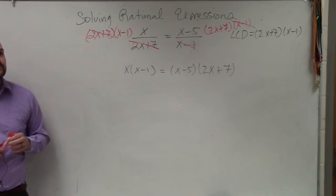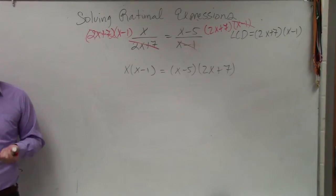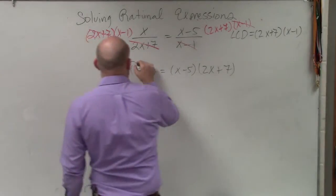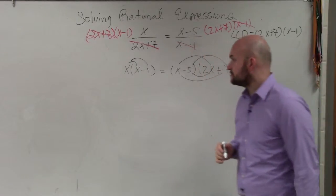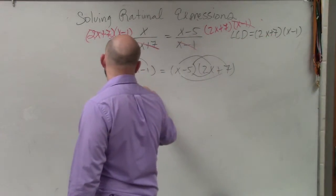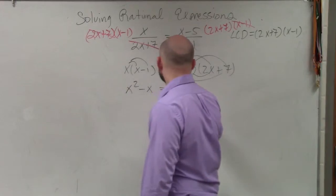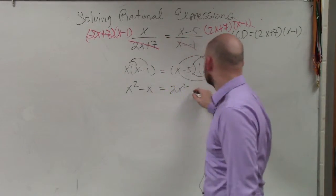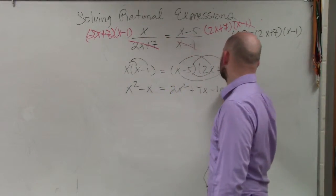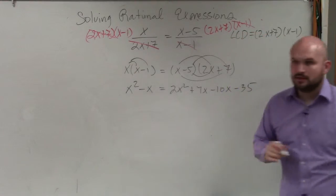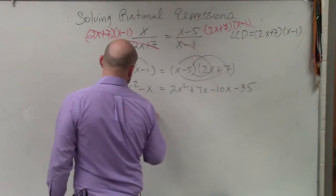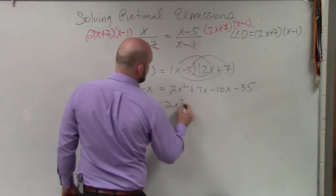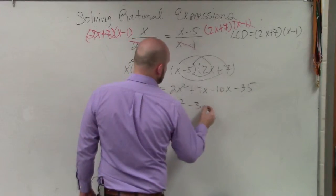Now, ladies and gentlemen, what we're going to do is apply the distributive property and multiply. Hopefully you guys remember FOIL and so forth. So here I have x squared minus x equals 2x squared plus 7x minus 10x minus 35. I can simplify this: x squared minus x equals 2x squared minus 3x minus 35.